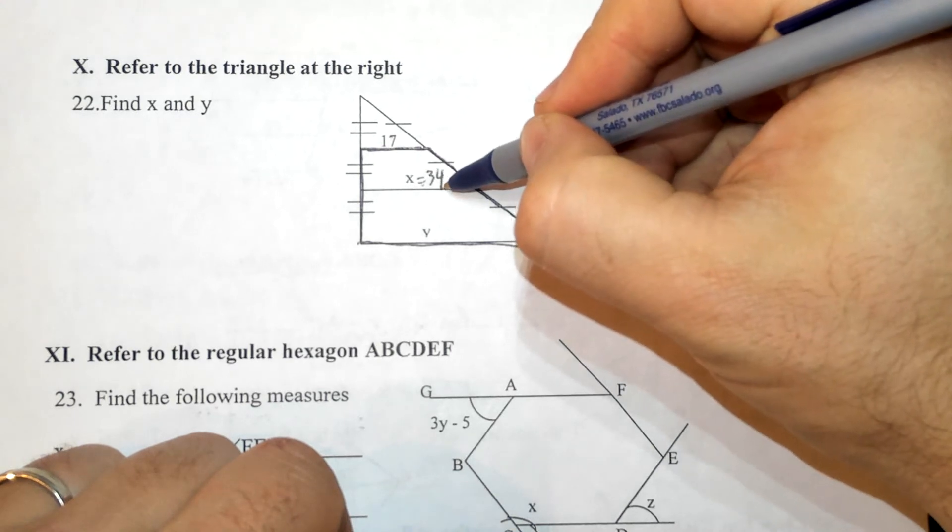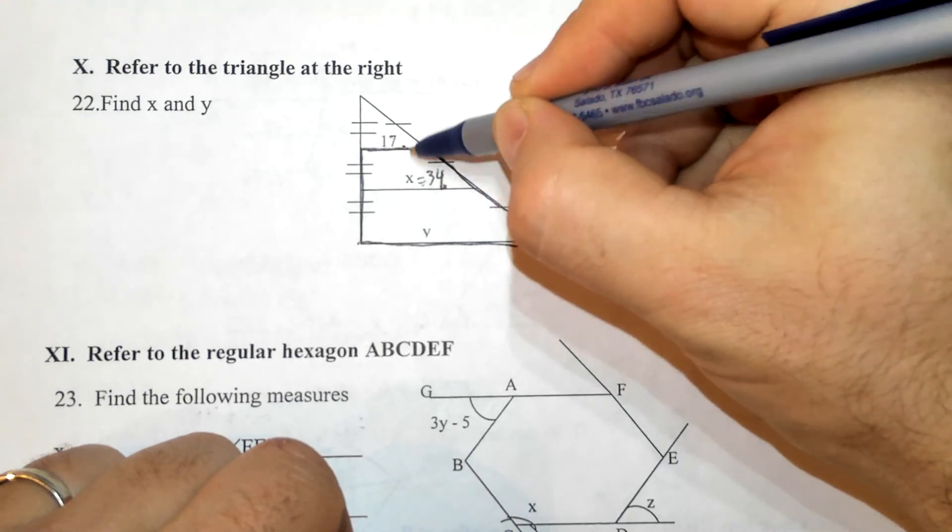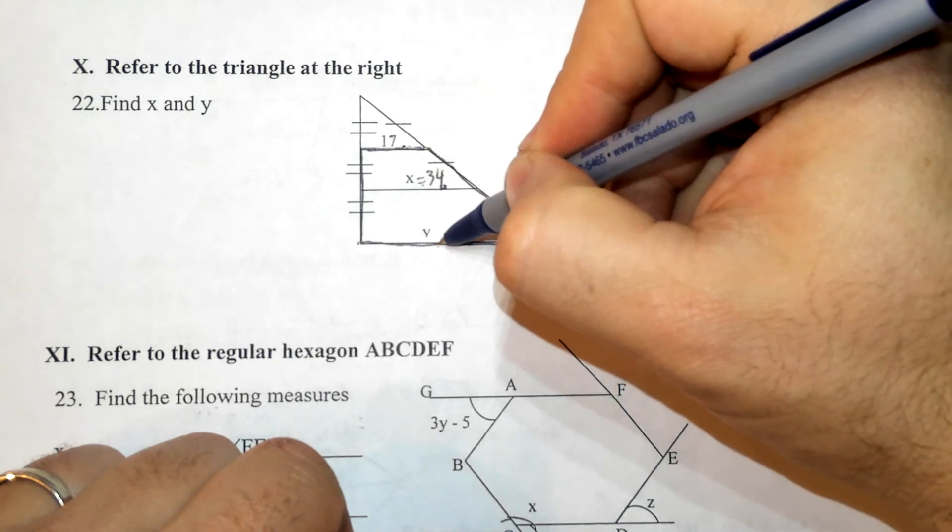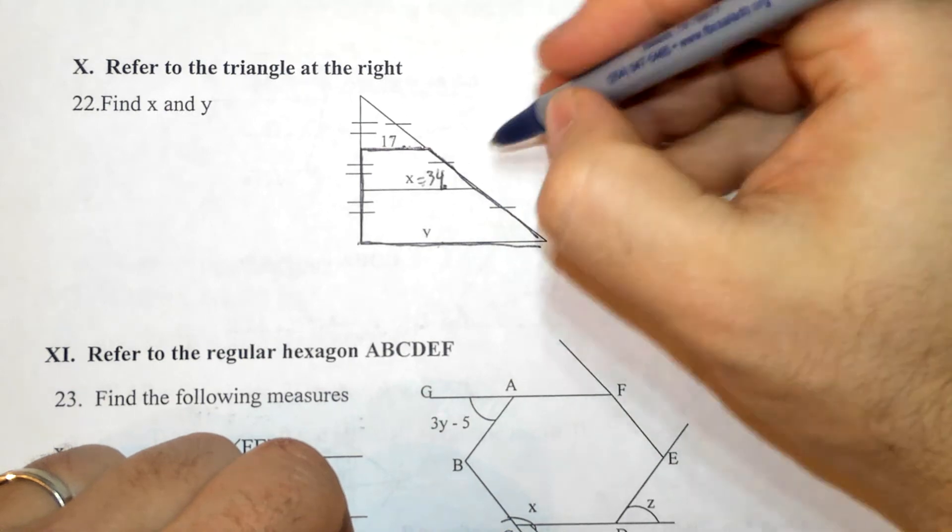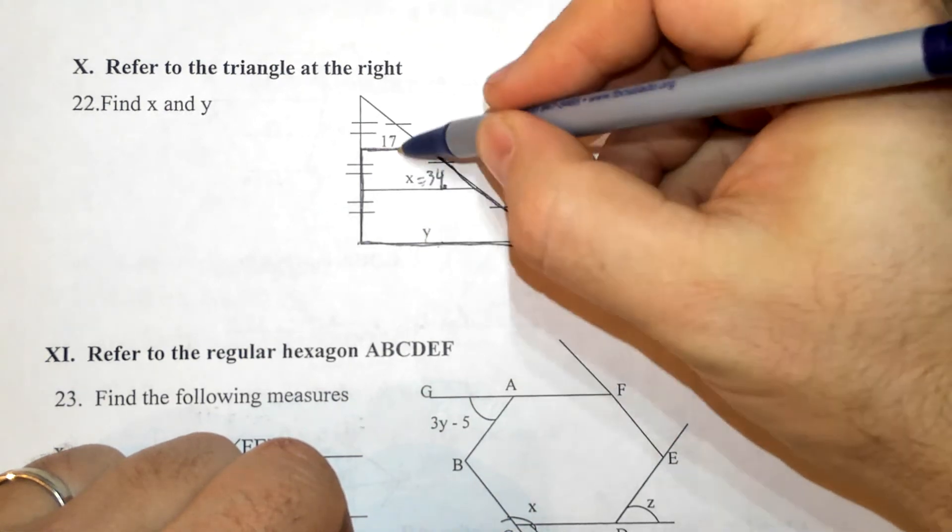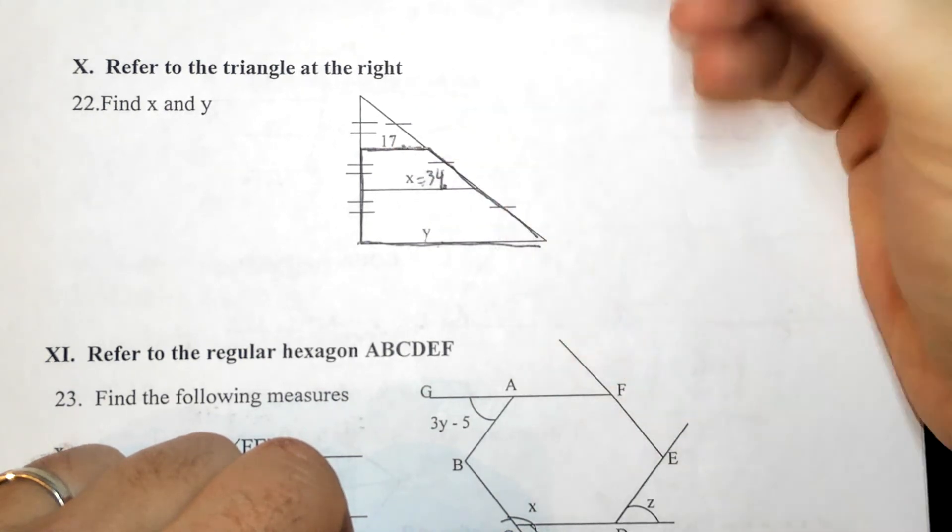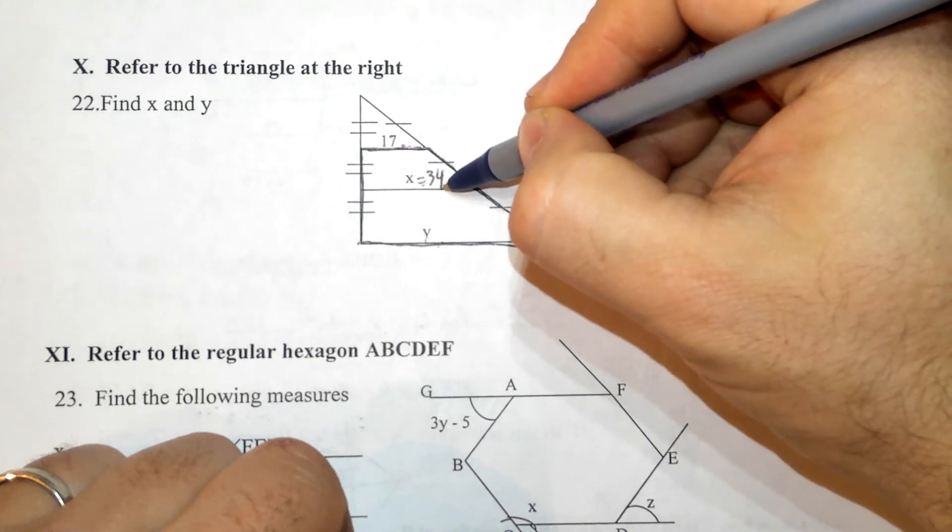Again, this one is the mid segment. I can use the mid segment and the top base to determine the length of the longer base on bottom. The average is add and divide by 2. In order to go from the average out, I multiply by 2 and then subtract the top one.